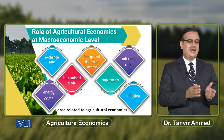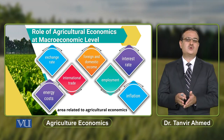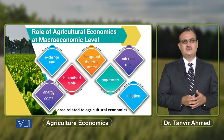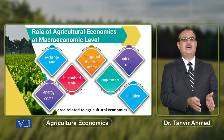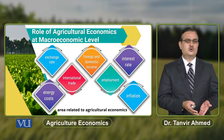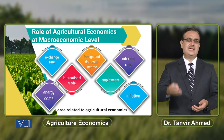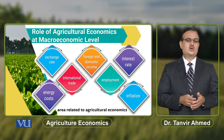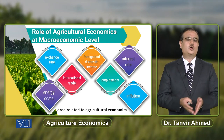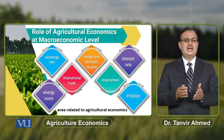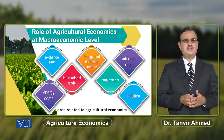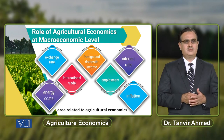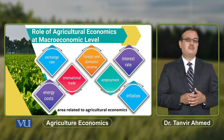Phir isi pattern pe, jo agricultural output ki prices hain, it has some significant influence over the inflation that prevails in the economy. Kya if there is less production of agricultural output, there is an increase in the prices of agricultural output in the market. Aur jab woh agriculture output ki prices kuch zyada ho jayengi, it contributes towards inflation — there is an increase in prices of food in the market.